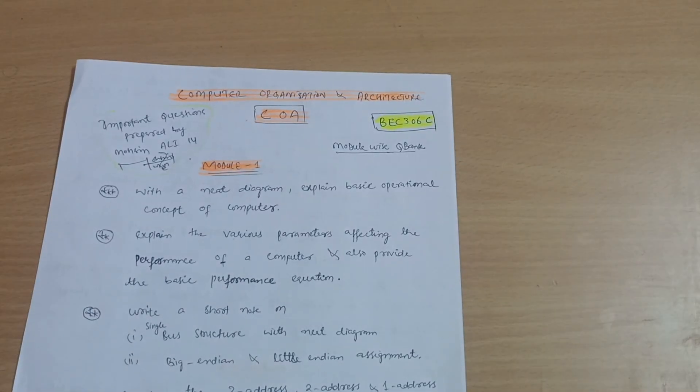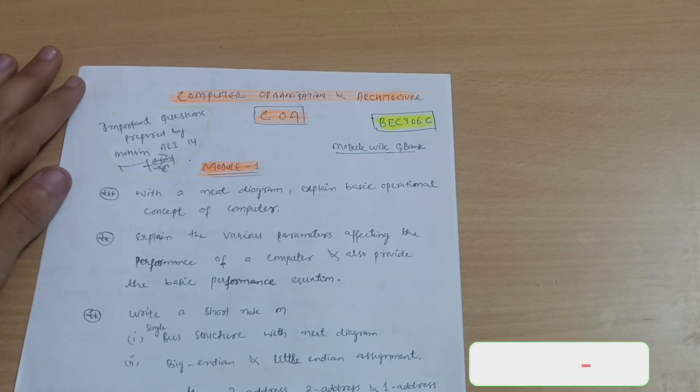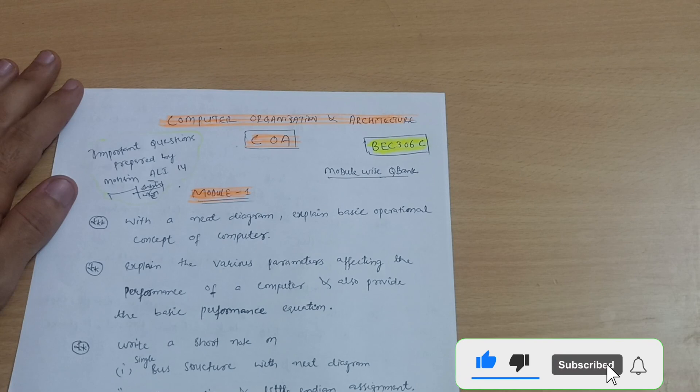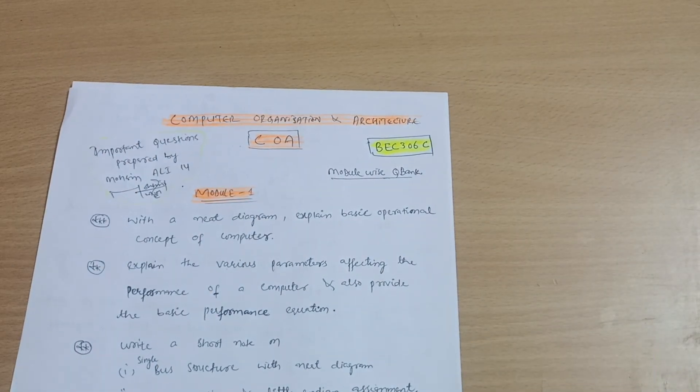Hello everyone and welcome back to my channel. Dear friends, hope you are all doing well. How are your papers going on? Make sure you comment down how many marks you are attempting in the examination. So this is the passing package video for the Computer Organization and Architecture subject for the EC stream students. Its subject code is BEC306C. Module wise question bank is here.